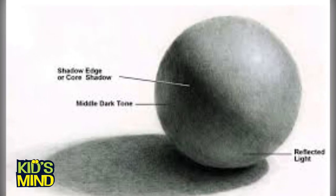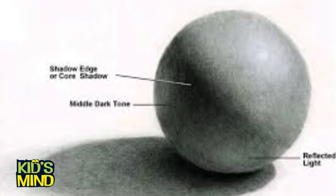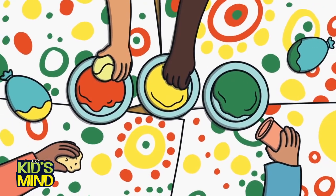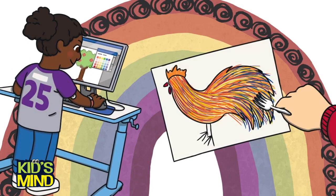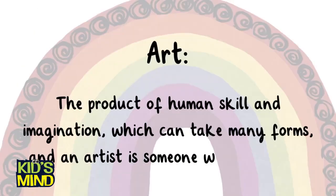With this introduction we can easily and comfortably move on to the next place, where we show you the types of pencils and materials we use for drawing. An artist can be anyone who makes and creates art. There are many different ways to be an artist because there are many ways to make art. Art is the product of human skill and imagination, which can take many forms, and an artist is someone who creates it.